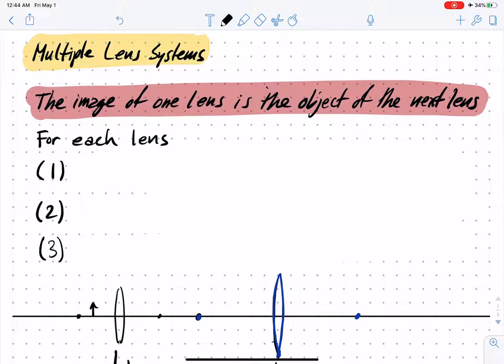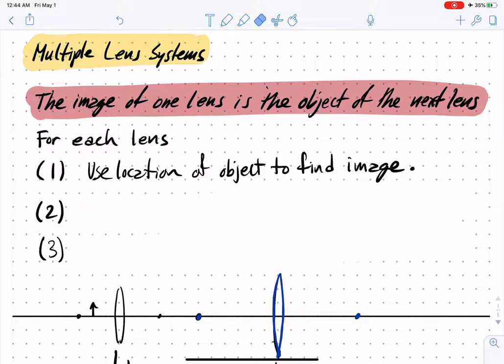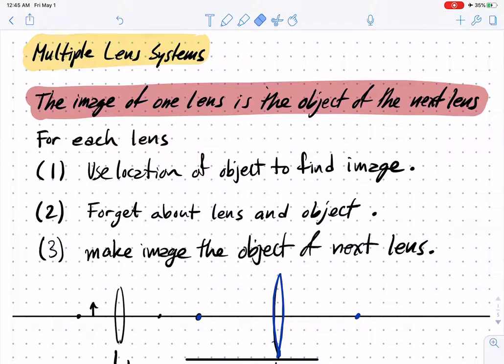The procedure is that for each lens you use the location of the object to find the image. Once you've done that, you forget about that lens and the object that created the image. The next step is to make the image that you just found the object for the next lens.